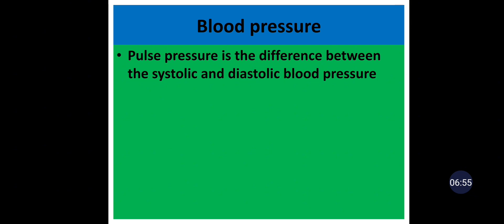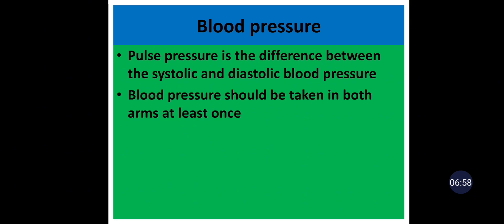Pulse pressure is the difference between systolic blood pressure and diastolic blood pressure. Pulse pressure is higher in cases of hyperdynamic state, patients with arteriovenous fistula, aortic regurgitation, pregnancy, and so on. Whereas pulse pressure is lower in hypovolemic states and patients with stroke or heart failure.